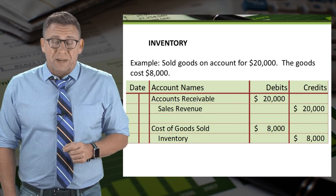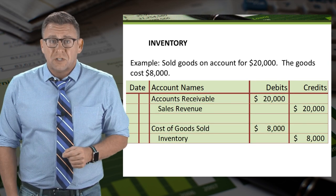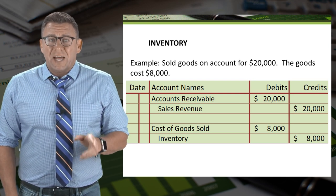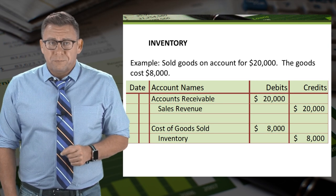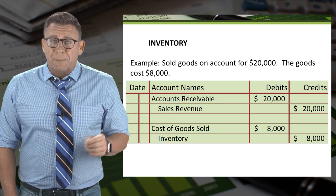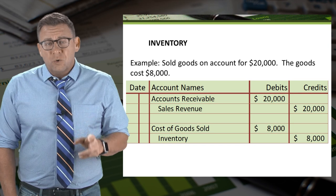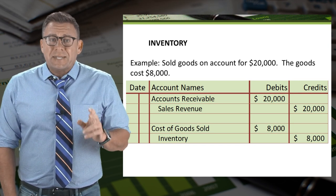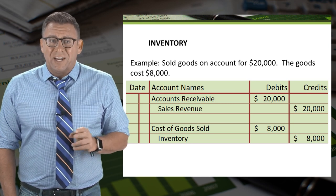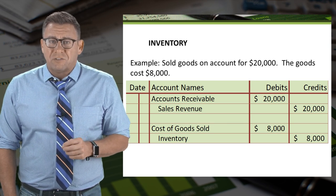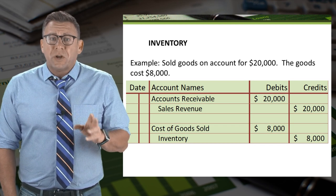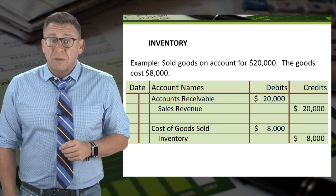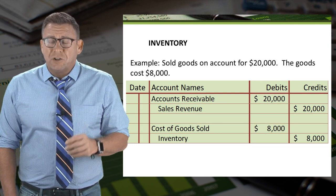Now let's assume we sold that inventory for $20,000 — we call that the price. When we sell inventory, we have two journal entries to record. First, we debit accounts receivable and credit sales revenue for $20,000, the price. Second, we debit cost of goods sold and credit inventory for $8,000, the cost. We need to record both revenue and matching expense in order to adhere to the matching principle and not overstate income.